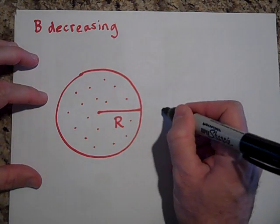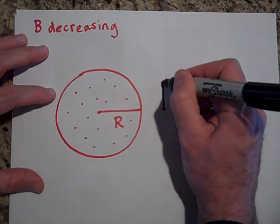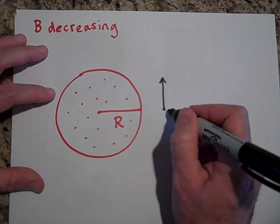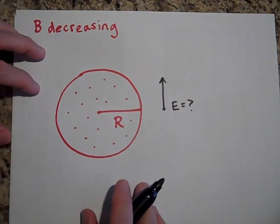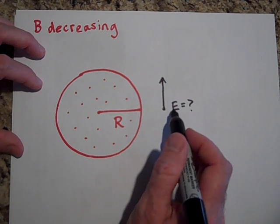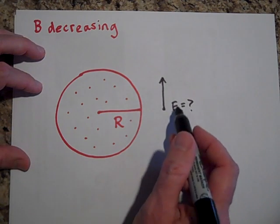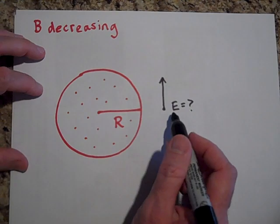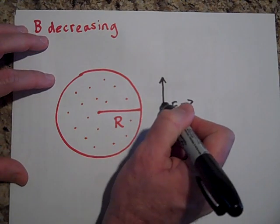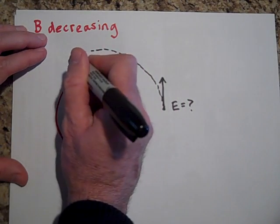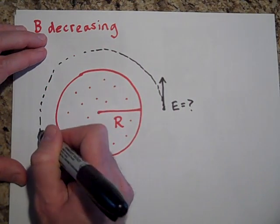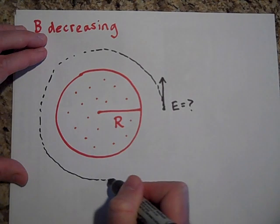But there still is an electric field. So if I wanted to find the electric field right here, we know it's going to be this way. But let me figure out just how big that field is going to be. So that's the question. That's not an electrostatic field, that's a non-electrostatic field. And I'm going to draw in my Faradaian loop.